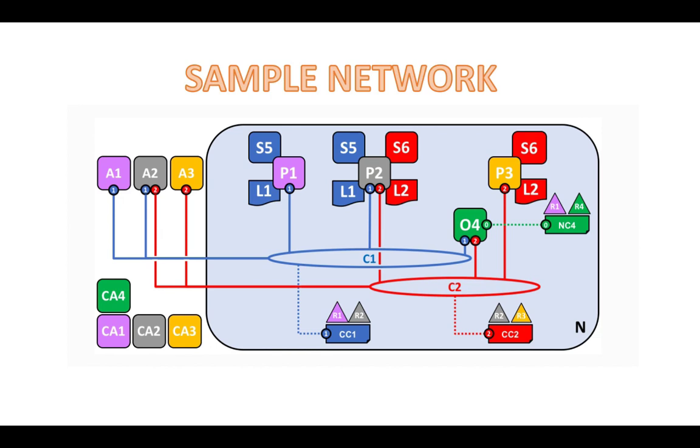Each of the four organizations has a preferred certificate authority. For organization R1, it is CA1. For organization R2, it is CA2. For organization R3, it is CA3. And for organization R4, it is CA4.